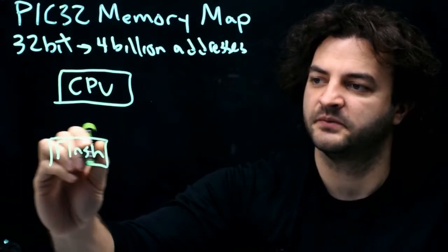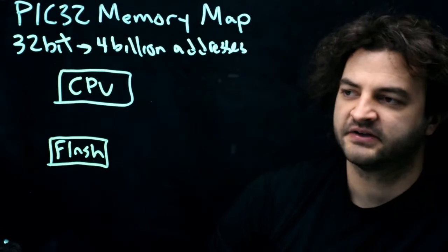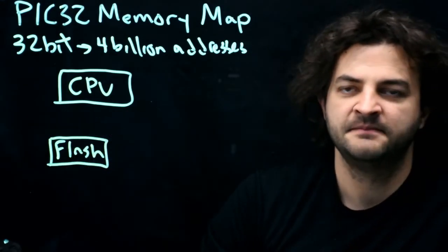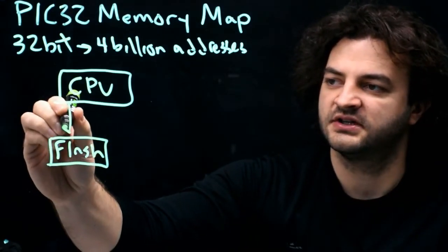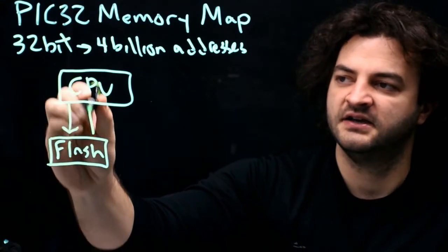This is where when we write our code, it gets compiled, it gets stored into flash memory. The CPU goes and says, I would like an instruction. And the flash says, okay, here's an instruction.